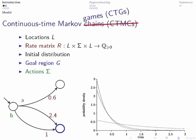If we now consider games, the only thing that comes into play are the actions. In each location we offer several actions from which we can choose. And the rate matrix also takes this into account, so for every action we might offer different rates to our successor states.